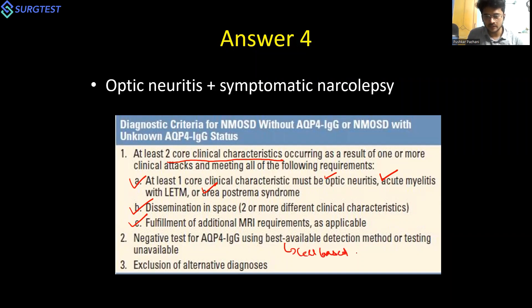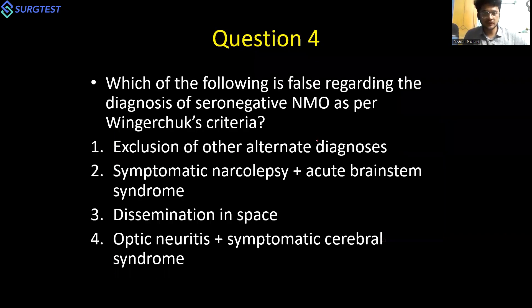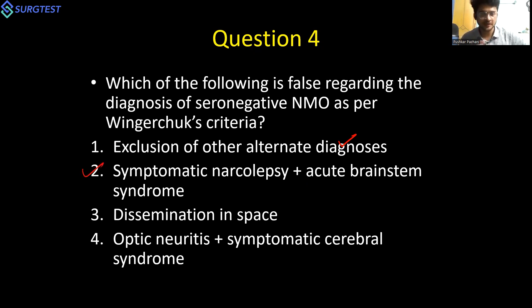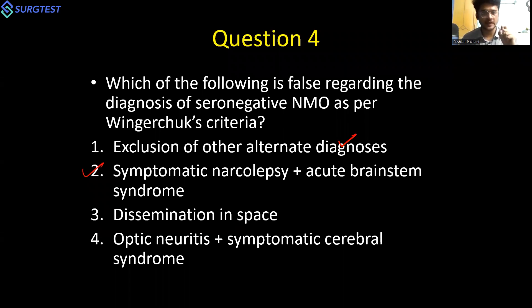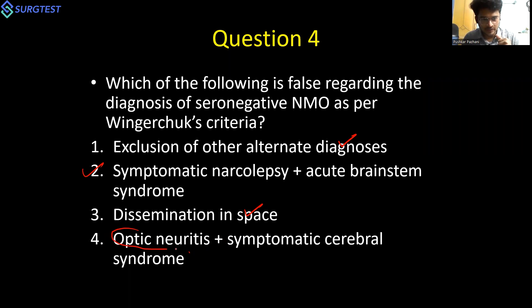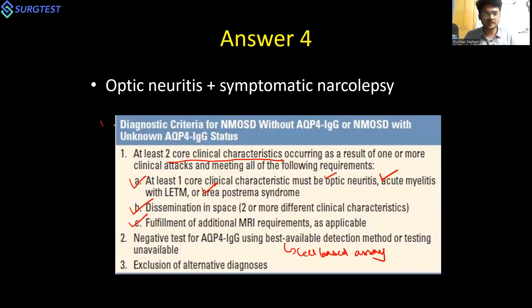For seronegative NMOSD, there must be dissemination in space and fulfillment of additional MRI criteria. The negative test for anti-aquaporin-4 should be done using the best available technique — the cell-based assay — and there must be exclusion of alternative diagnoses. Going back to the MCQ: exclusion of alternative diagnosis is true. The false answer is 'symptomatic narcolepsy plus acute brainstem syndrome,' because even though two core clinical criteria are present, neither is optic neuritis, transverse myelitis, nor area postrema syndrome — at least one of the two must be from that group.